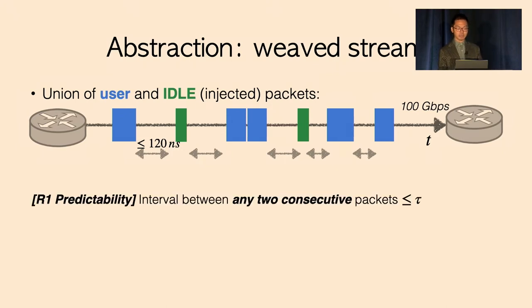More precisely, OpWeaver enforces two additional guarantees. The first requirement is predictability: no link stays unutilized for too long. In other words, the interval between any two consecutive packets is bounded by a threshold, whose optimal value is the inter-packet gap for a fully utilized link. In the case of 100-gigabit link, as shown in this graph, and also assuming MTU size to be 1,500 bytes, this value is 120 nanoseconds.